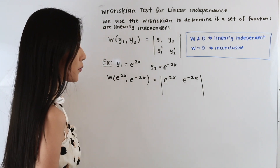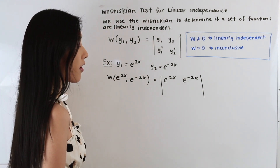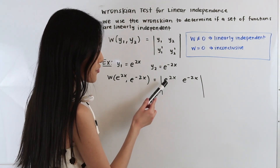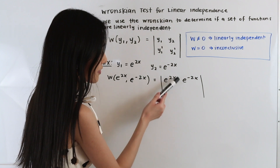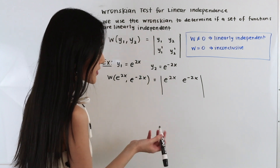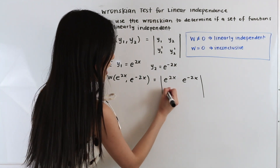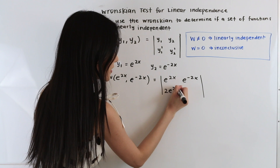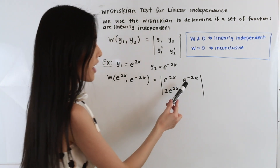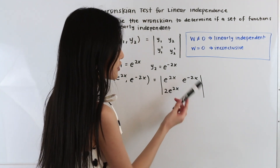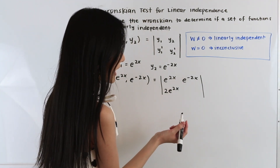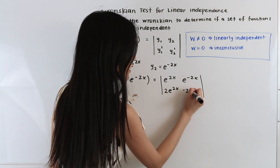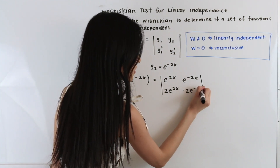In the second row go the derivatives of the functions in the first row. For e to the 2x, taking its derivative gives us 2e to the 2x. For e to the negative 2x, taking its derivative gives us negative 2e to the negative 2x.